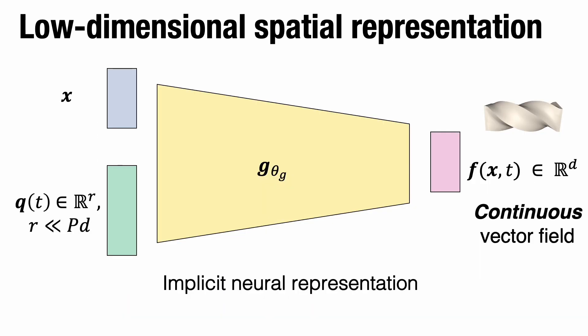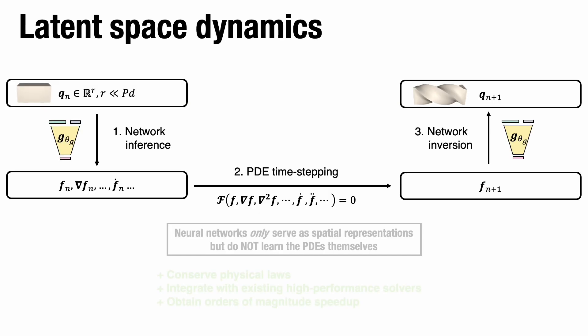We propose to speed up the computation by building a low-dimensional representation of the continuous vector field using implicit neural representations. The latent space vector Q's dimension R is orders of magnitude smaller than the PD degrees of freedom employed in the traditional numerical solver. Therefore, instead of updating PD degrees of freedom, we reduce the computation cost by updating the low-dimensional latent space vector.